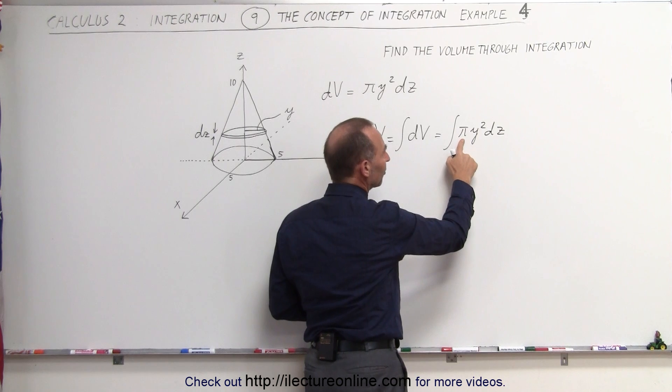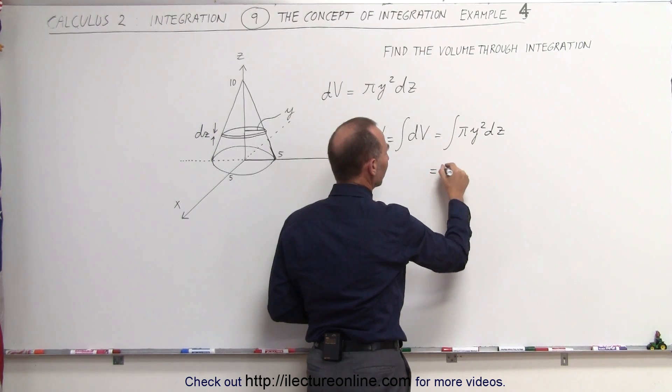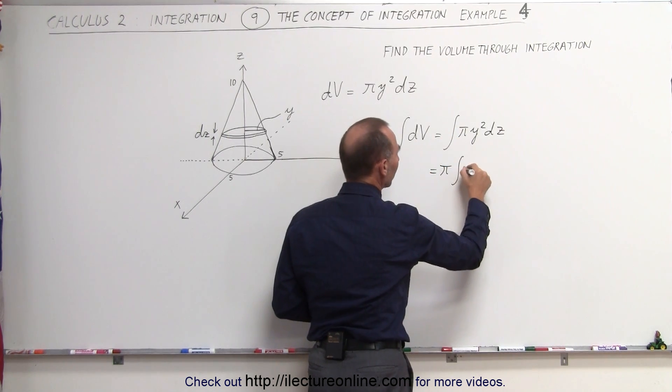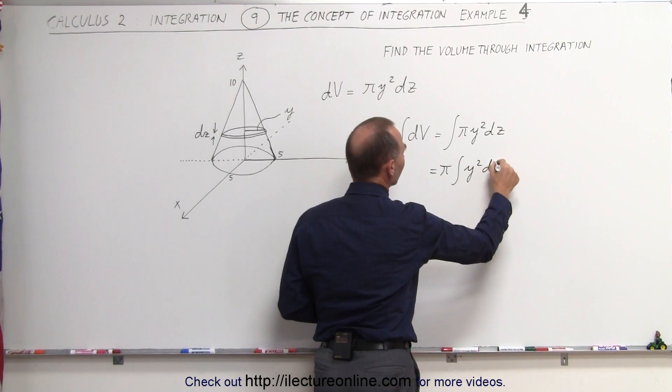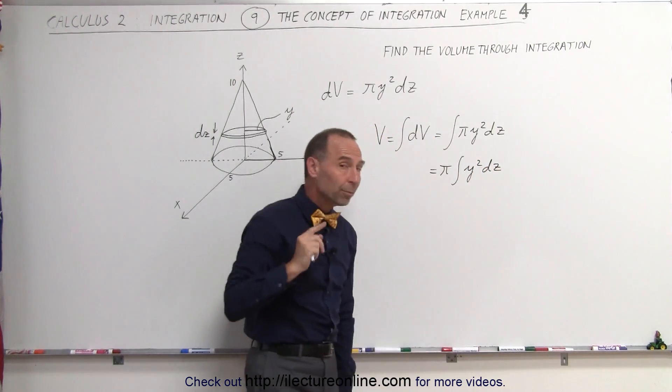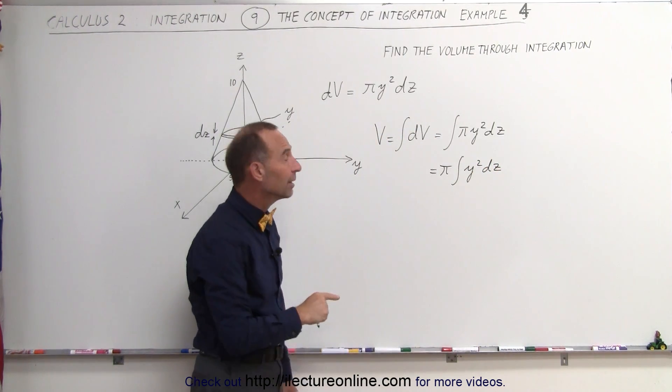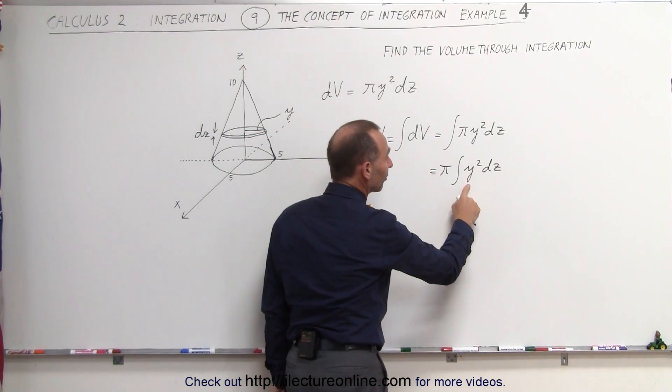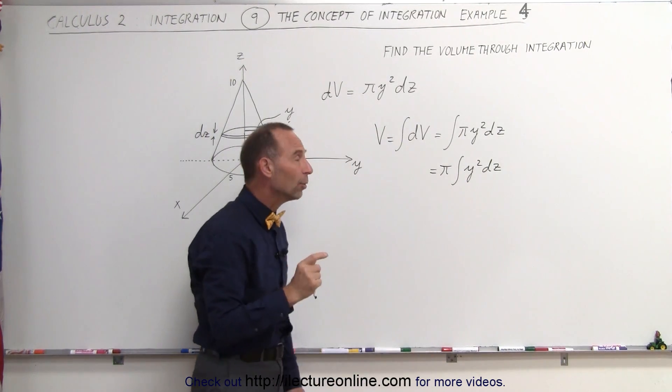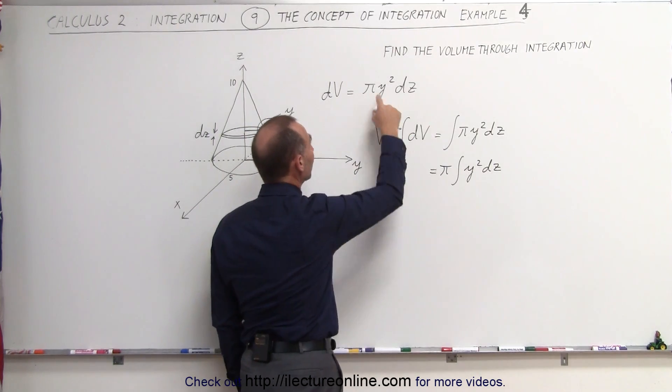That means that this is equal to the integral of π times y squared times dz. Now, since π is a constant, it can come outside the integral sign. So this is equal to π times the integral of y squared times dz. Now, we have one problem here. We cannot yet integrate this because the variable y is not the same as the variable z.